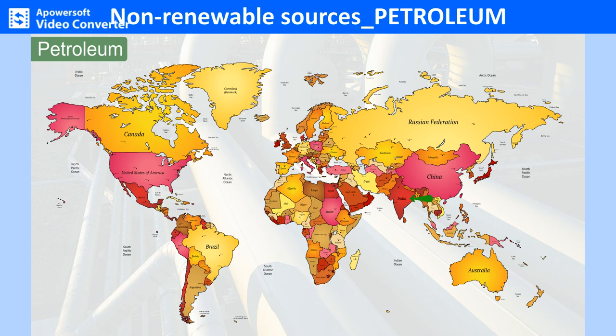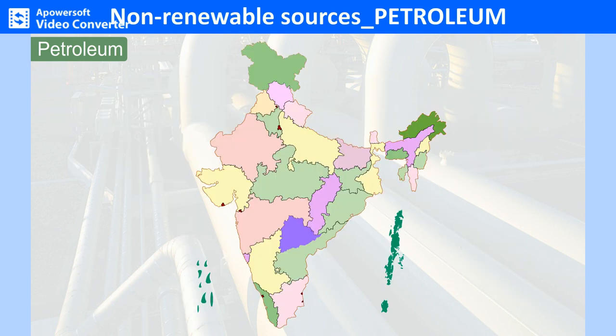India has large reserves of petroleum, but these are not enough to meet the demands of the country's huge population. Petroleum fields are found in eastern Assam, in Gujarat, and offshore in the Arabian Sea at Bombay High. These three areas account for nearly the entire oil output in India. Other places include Tamil Nadu, Andhra Pradesh and Arunachal Pradesh.